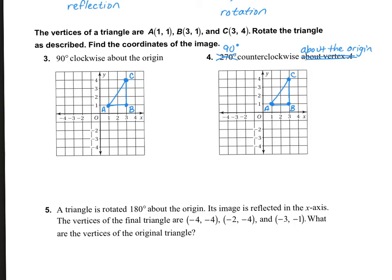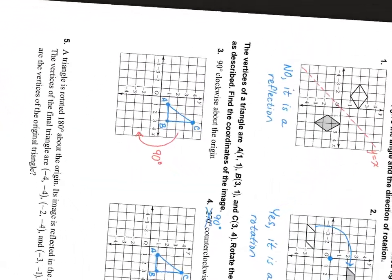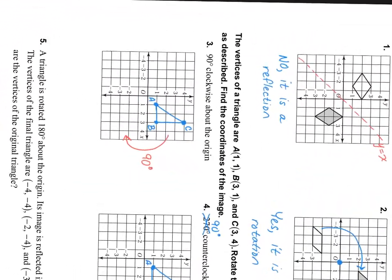Let's take a look at number three — it says 90 degrees clockwise. That means the figure is heading clockwise, which means it's going to end up on its side in quadrant four. My suggestion is to literally turn your paper sideways in the direction that it's asking you to go. In this case, 90 degrees clockwise — so I'm going to literally turn my paper 90 degrees clockwise.